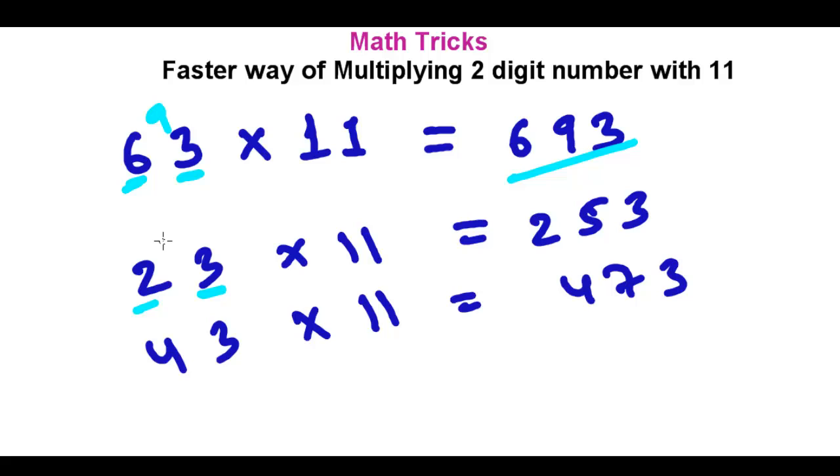Similarly 2 plus 3, that is 5. So 2, 5, 3 is the solution. Similarly 4 and 3. So 4 plus 3, that is 7. So 4, 7, 3. That's the trick.